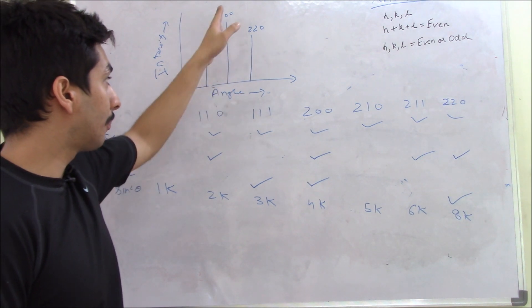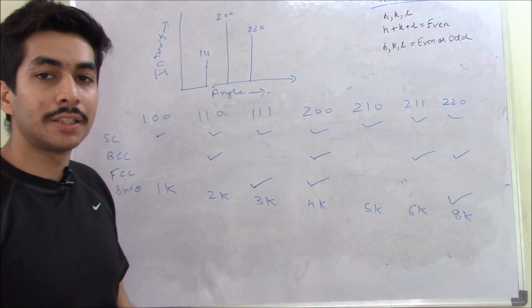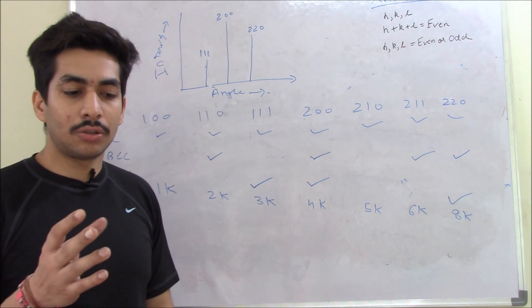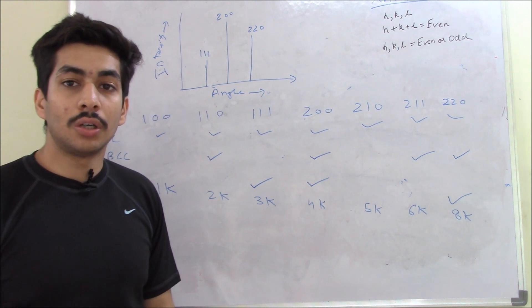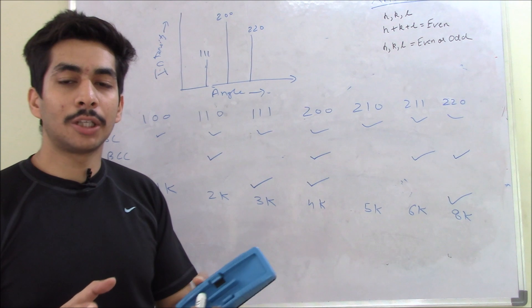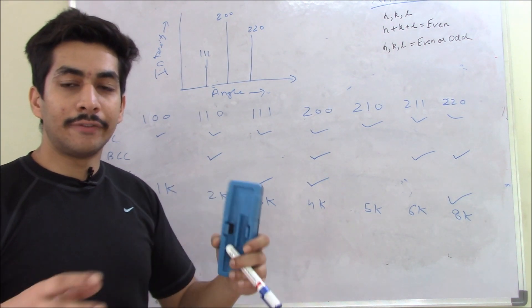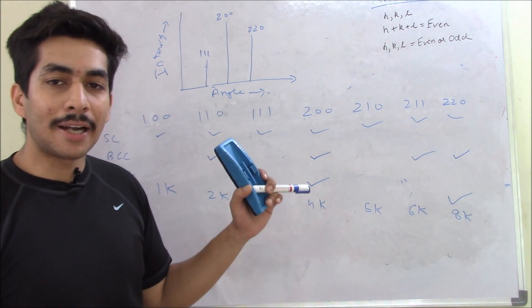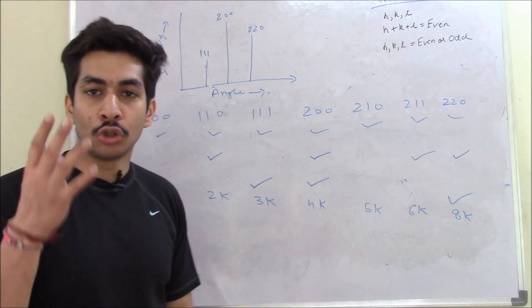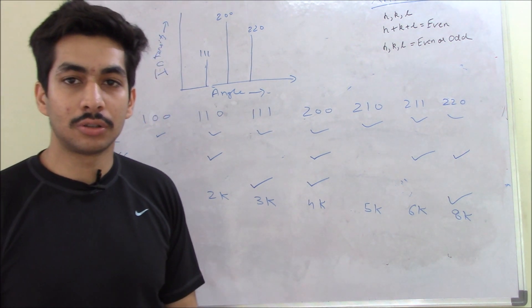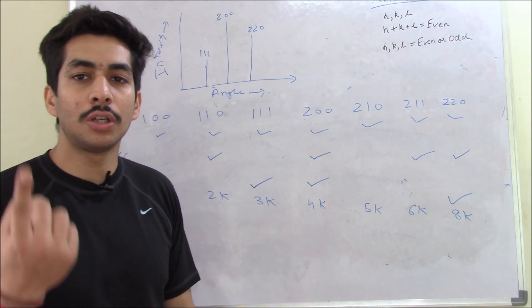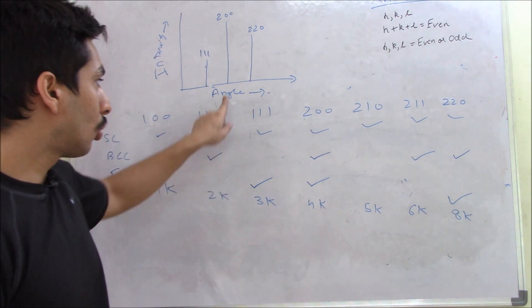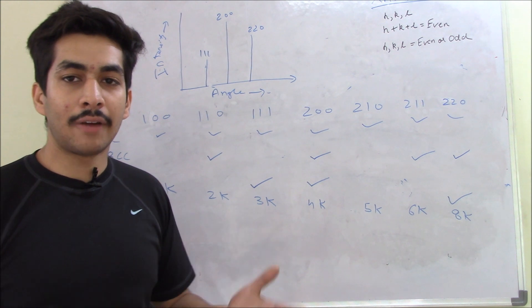Sometimes you'll see that some lines are intense and some are diffused. The reason for that depends on electron density. If the electron density from a particular plane is high, the intensity is going to be high. That is why you cannot observe hydrogen in XRD patterns — hydrogen only has one electron, so the peaks are not intense enough.